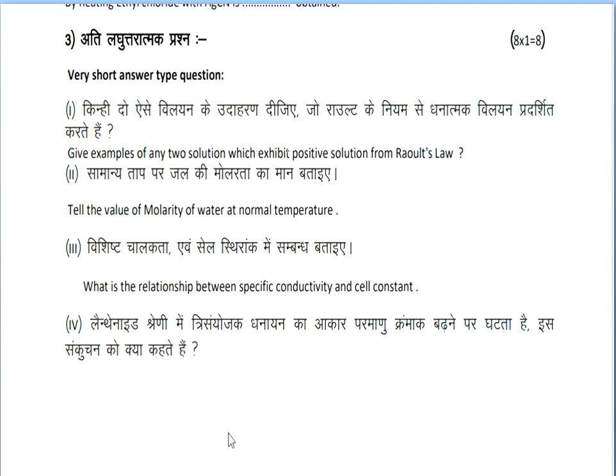There are two solutions. First is acetone and second one is carbon disulfide. There are two divisions: positive and negative. This is the example of positive deviation.